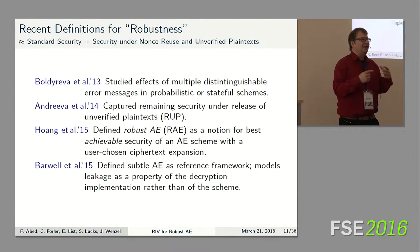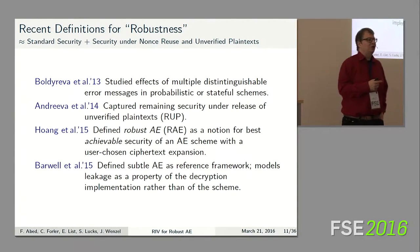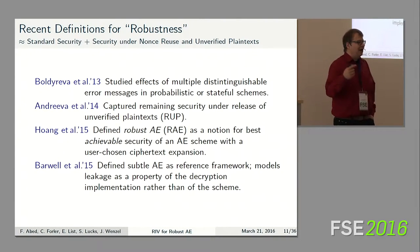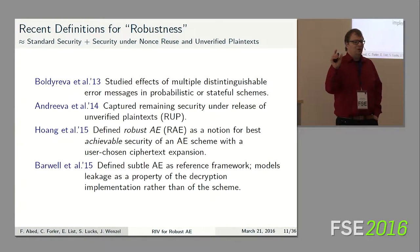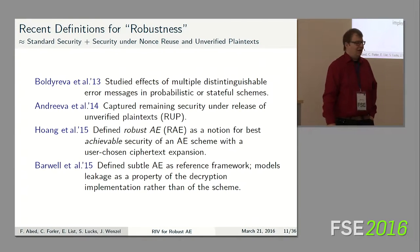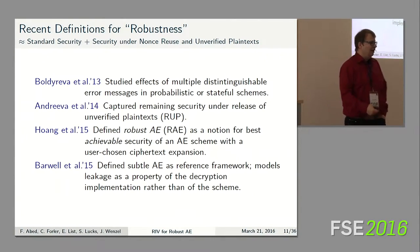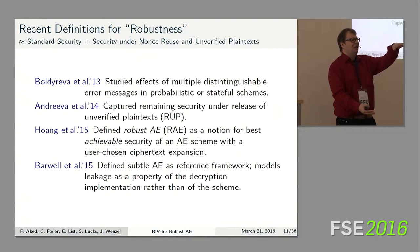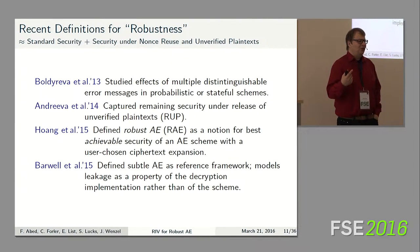Huang and others enhanced this model by allowing the adversary to choose the length of the authentication tag — something not allowed by RIV, which is robust in the sense of the Andreeva model. Finally, Barwell and others defined another notion that captures and generalizes all three above: you define a leakage function as part of your definition, and can then choose to leak everything or just error information.